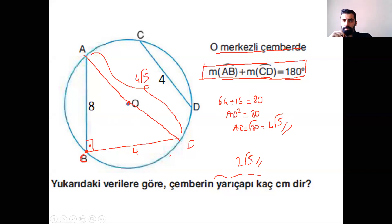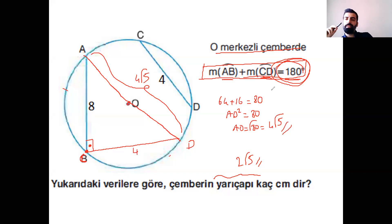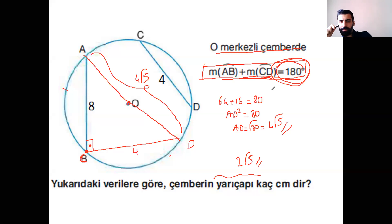Tamamdır. Bu taşıma soruları arkadaşlar, bunlara dikkat edin. Çünkü normal diğer sorularda her şey aklınıza gelirken bu tarz sorularda taşımak sizin aklınıza gelebilecek en son hamlelerden bir tanesi. Bunu nasıl anlayacaksınız? Farklı kirişlerin toplamı 180 ile alakalı bir bilgi vermiş. Kirişlerin toplamı 180 olmasının tek bir amacı var: bizi çapı göstermeye çalışıyor, çapın kendisine denk getirmeye çalışıyor. O yüzden CD kirişini getirip AB'nin yanına taşımış oluyorsunuz. Sıkıntı yaşayan var mı?